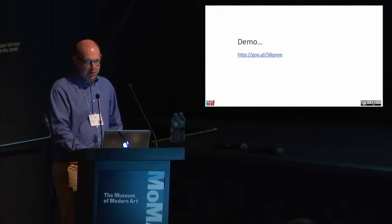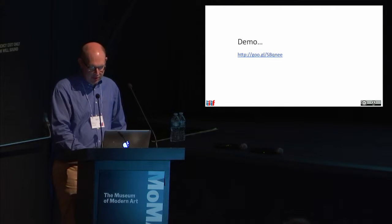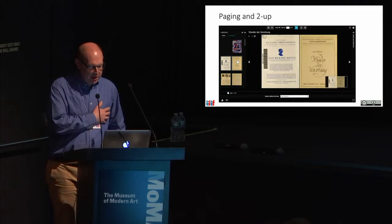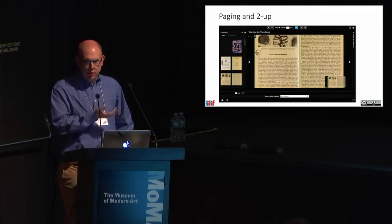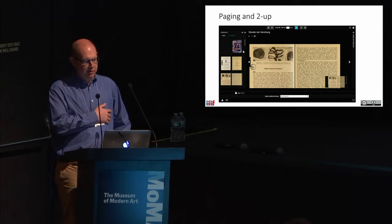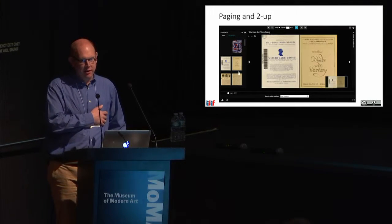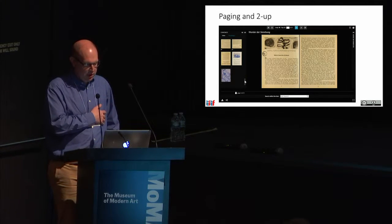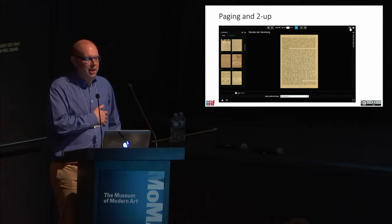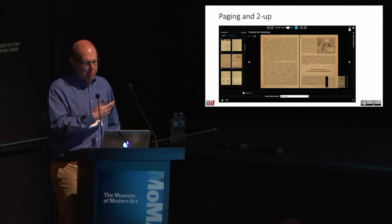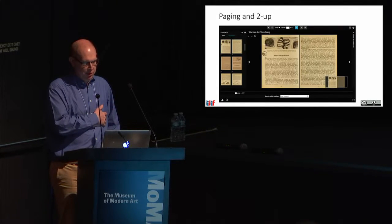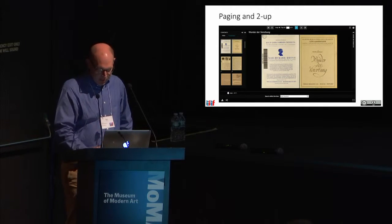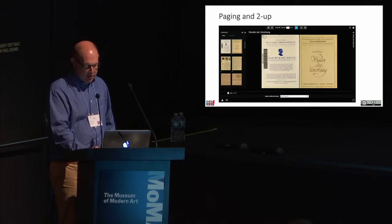I'm going to run through as many features as I can cram in the time I have, not including drag and drop. Starting with the basics — we have a two-up viewer. The presentation API tells the viewer that this work is paged, and the viewer knows which way around the pages go and can present the images as a two-up view, which we can turn off. Because the presentation API tells the viewer the book is ordered a certain way, we can recombine the images even though they're separate canvases in a manifest.